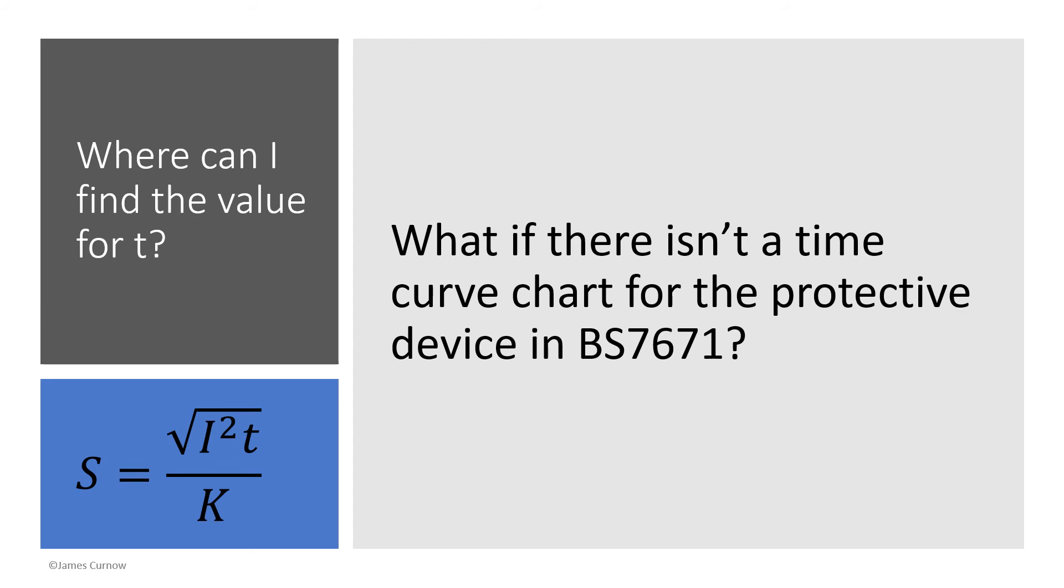For most types of protected device you'll be able to find the time curve characteristics in Appendix 3 of BS 7671. But there are some types of protected devices such as MTCBs or ACBs that aren't listed in BS 7671. In that situation, to find the value for T to carry out the equation, you would contact the manufacturer and request a time curve chart. You would then take the fault current for the circuit and plot it on the manufacturer's time curve chart to find the value for T.